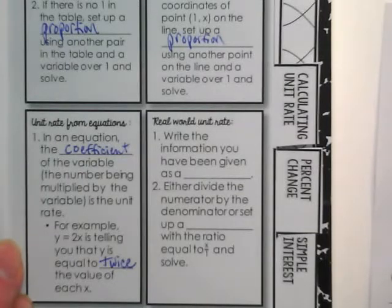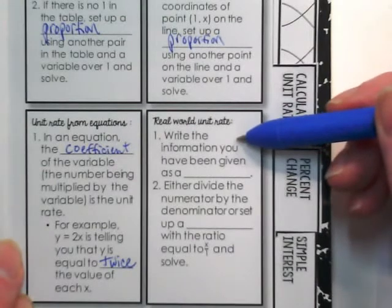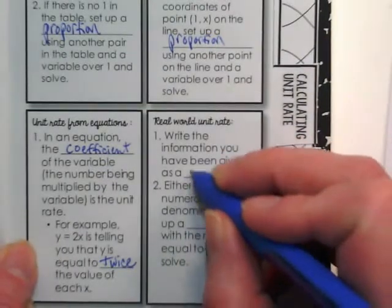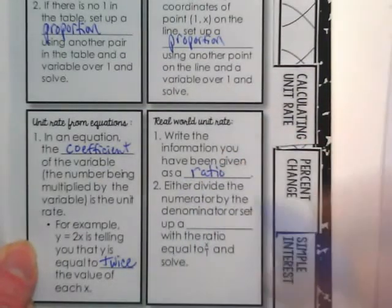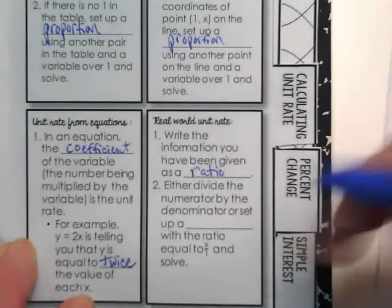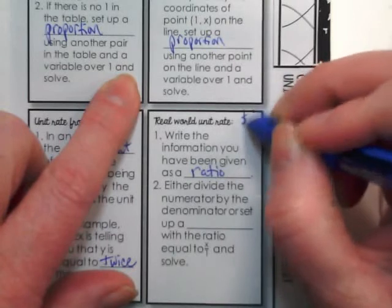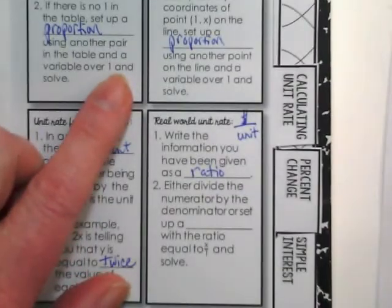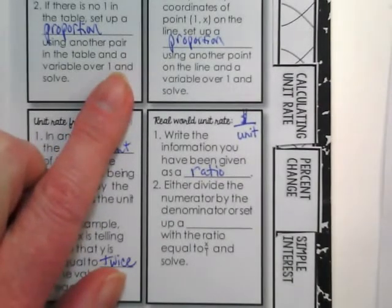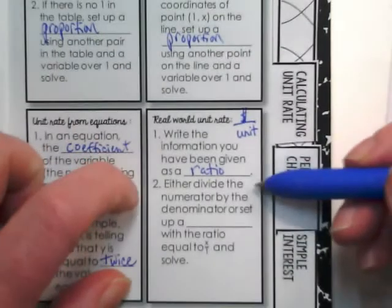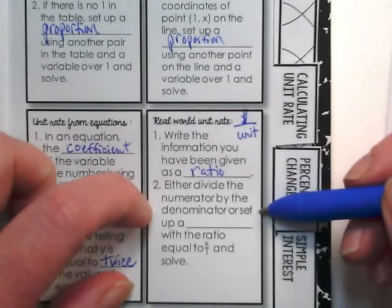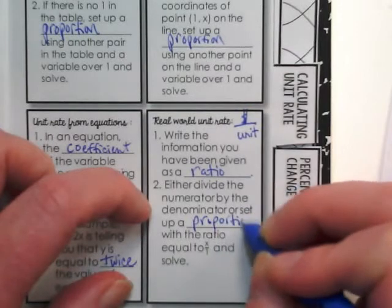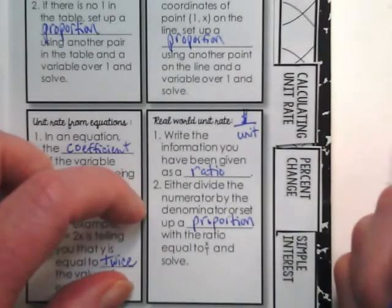Real world unit rates: We did this with pictures from the grocery store. Write the information you have been given as a ratio. If you recall, we said if there's money involved, the ratio always has the money on the top and the unit on the bottom of the ratio. Then either divide the numerator by the denominator, or set up a proportion with the ratio equal to x over one and solve.